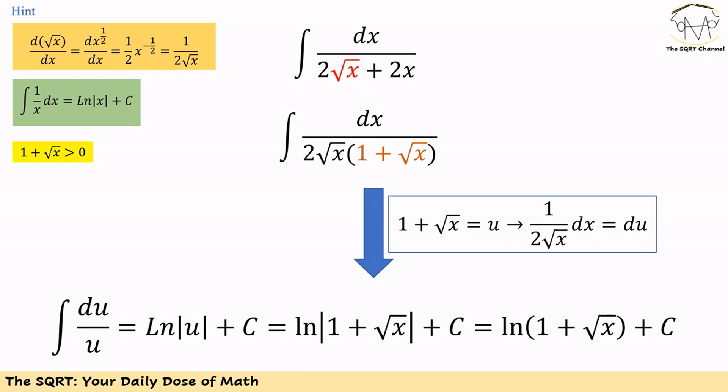With that, the whole integral is going to be du over u, which is ln of the absolute value of u plus c. Since u is 1 plus square root of x and it is always positive, we can simplify the whole expression and write it as ln of 1 plus square root of x plus a constant c. And that's our final answer.